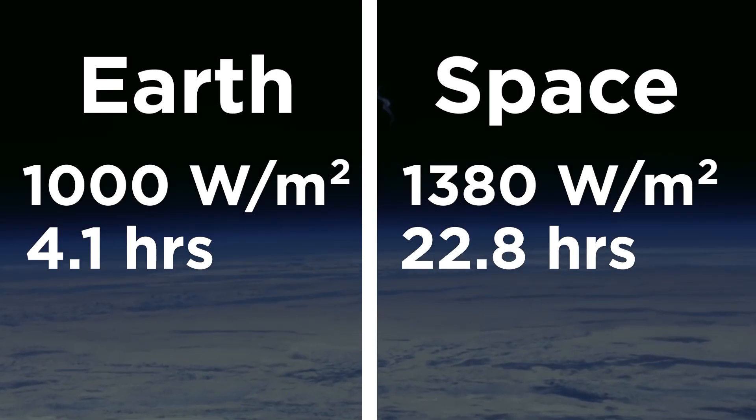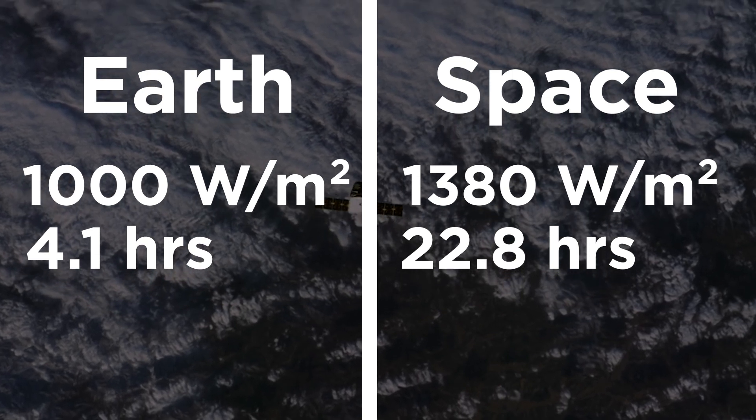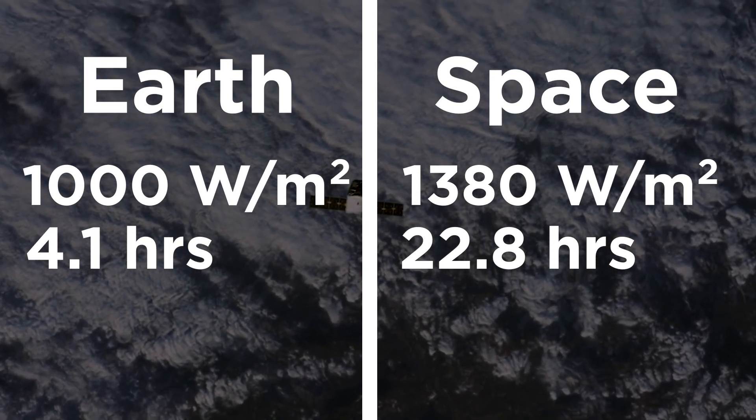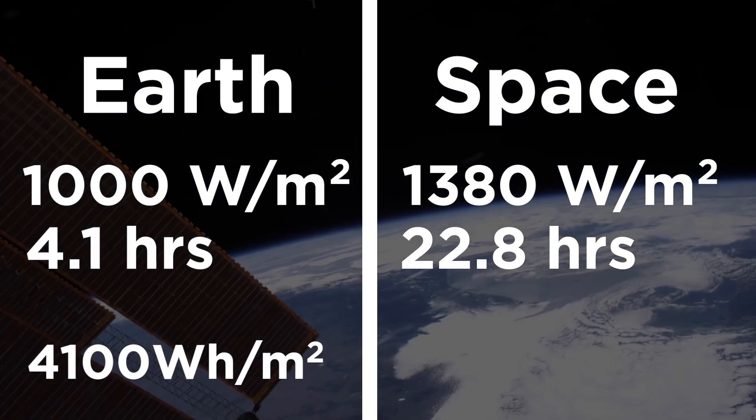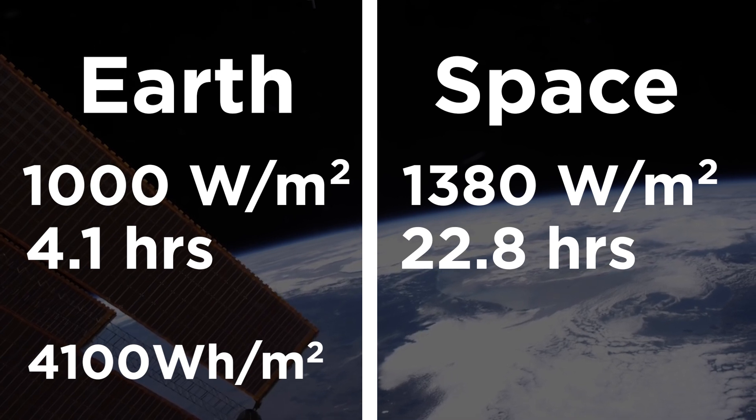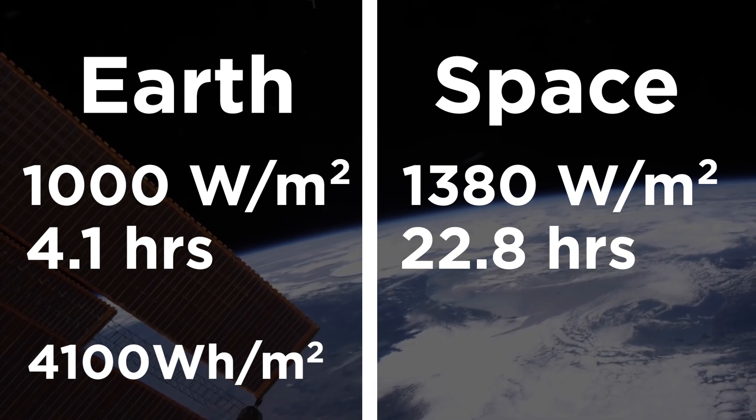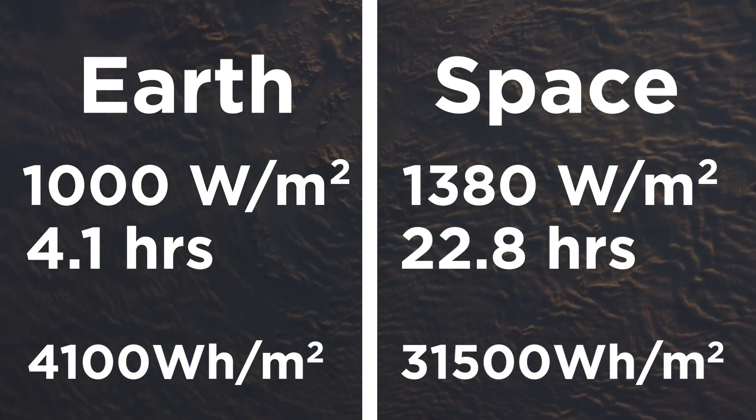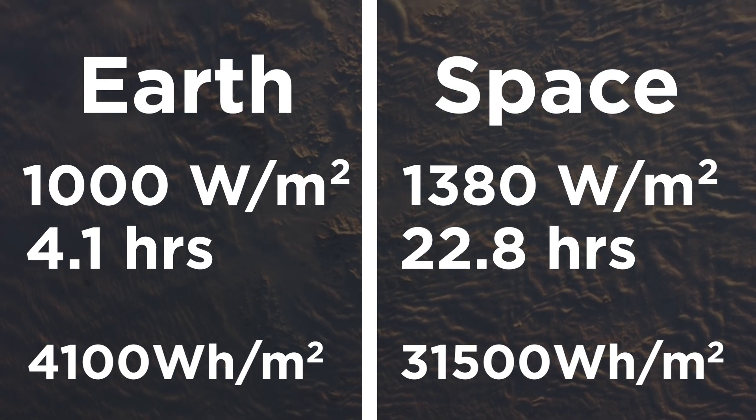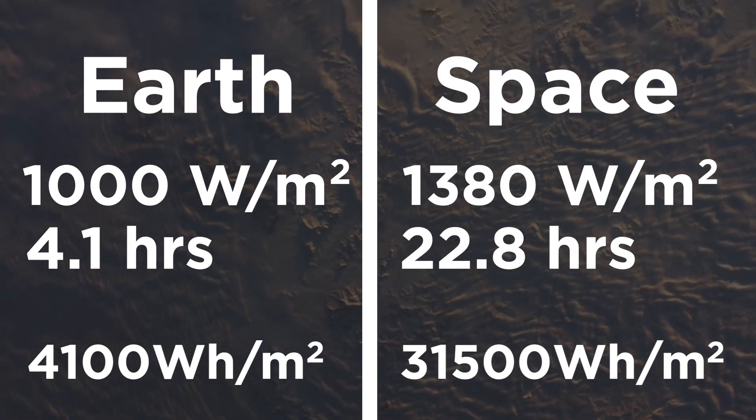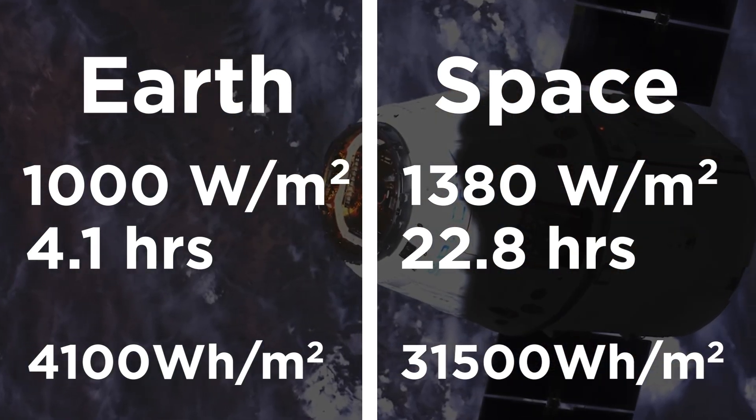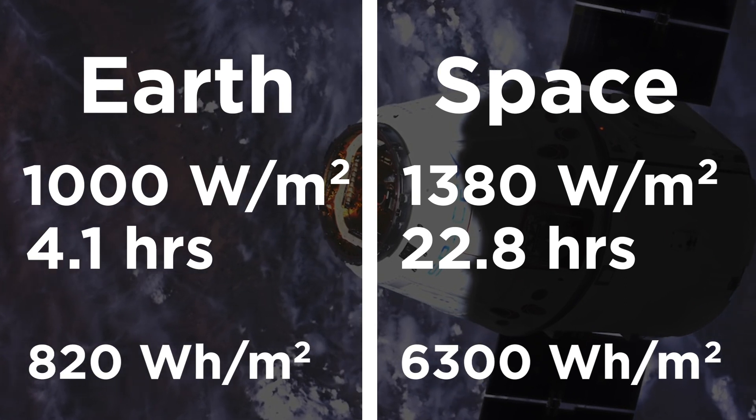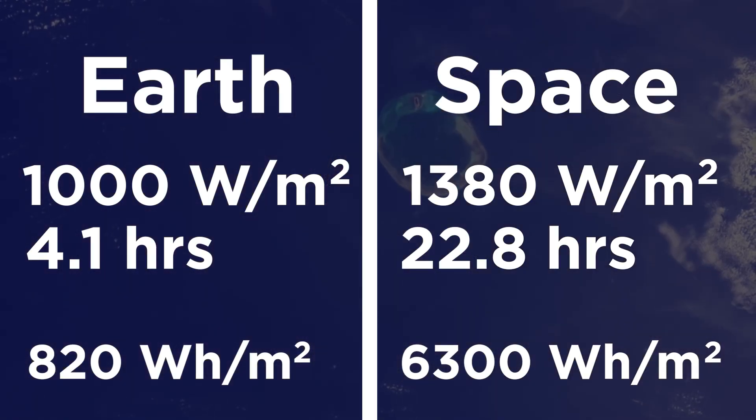Therefore, within a 24-hour period, if solar panels were 100 percent efficient, Earth-based panels should generate around 4100 watt-hours per square meter, whereas space-based panels should generate around 31,500 watt-hours per square meter. So assuming both are around 20 percent efficient, over a 24-hour period each square meter of solar panel can expect to generate 820 watt-hours on Earth and 6,300 watt-hours in space.